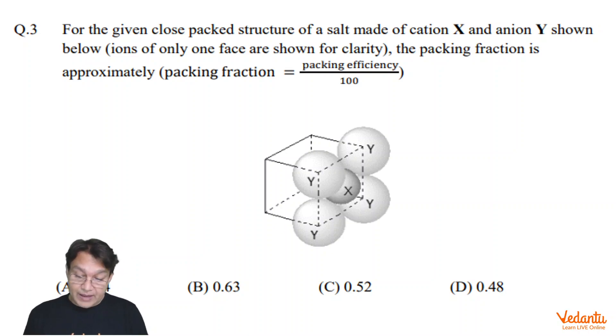In this question, packing fraction of a given cubic structure is asked, but one atom is shown in the figure in such a manner that you could not figure out whether it is present in square planar arrangement or in body centered void.